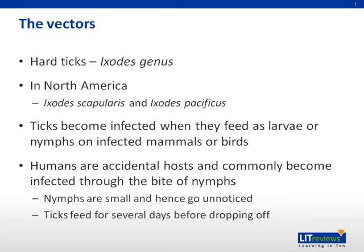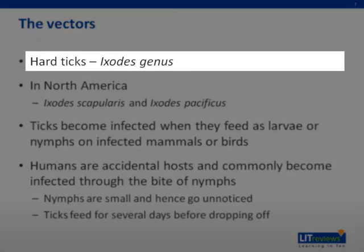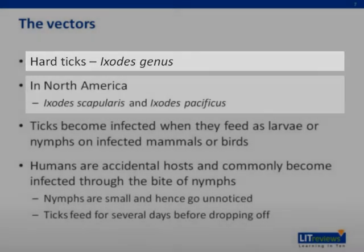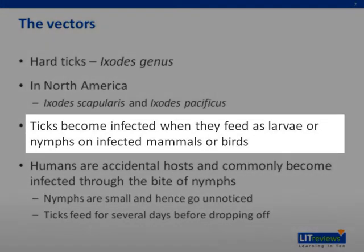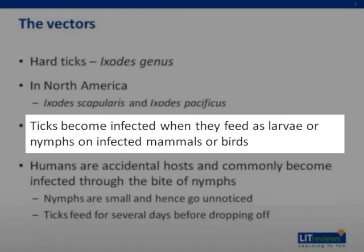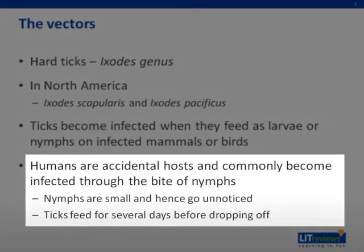The vectors for Borrelia burgdorferi are hard ticks that belong to the Ixodes genus. In North America, the principal vectors are Ixodes scapularis and Ixodes pacificus. Ticks become infected when they feed as larvae or nymphs on infected mammals or birds. Humans are accidental hosts, and commonly become infected through the bite of nymphs rather than adult ticks. Nymphs are smaller and hence go unnoticed, and they can feed for several days before dropping off.